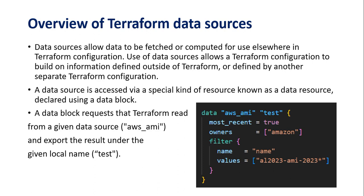A data source is accessed by a special kind of resource known as a data resource, declared using the data block. To use a data source in a Terraform configuration file you declare a data block. In this example I have declared a data block to fetch the AWS AMI ID. A data block requests that Terraform read from a given data source — in this case 'aws_ami' — and export the result under the given local name, which is 'test'. Whatever data is fetched gets exported to that local name.